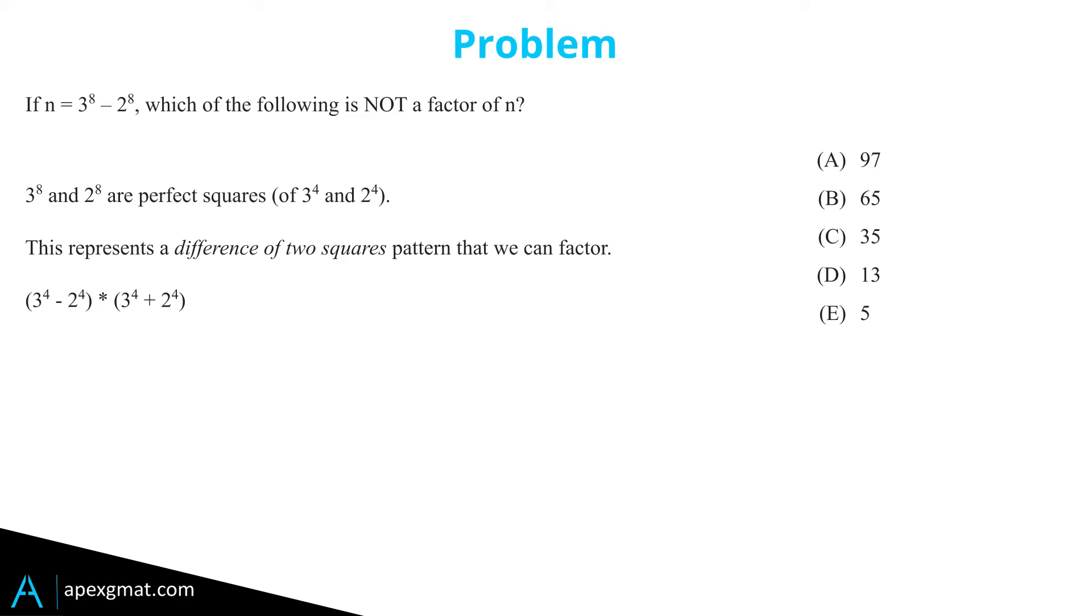Once again, the first term is a difference of two squares. The second term we can't do anything with. So we break down that term and lo and behold, 3 squared minus 2 squared times 3 squared plus 2 squared times 3 to the fourth plus 2 to the fourth. And once again, we can factor that first term out into 3 plus 2, 3 minus 2, and so on.